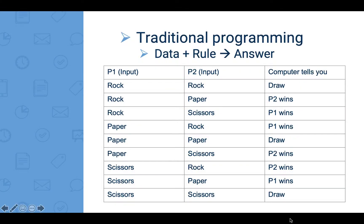In traditional programming, we input the data as well as the rule of the game to the computer. Then the computer will give us the answer. In this case, our inputs are the choices of the two players. With the rules, the computer then decides who will win the game.